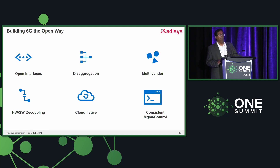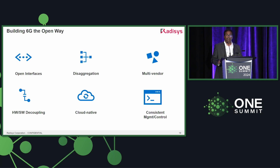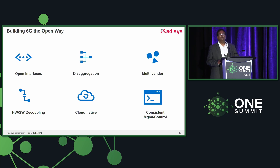Going with the theme of the day, we are going to build 6G the open way — on the fundamentals of Open RAN. This means having open interfaces, the level of disaggregation needed, multi-vendor network solutions, hardware-software decoupling, and being cloud-native. One element still evolving — which was highlighted in the keynote session today — is a consistent management and control required to uniformly operate the entire network irrespective of vendors. That's going to be one key element of how we evolve into 6G.